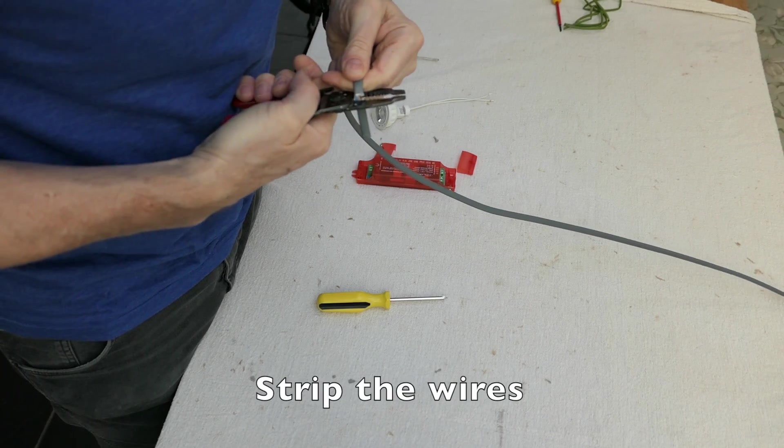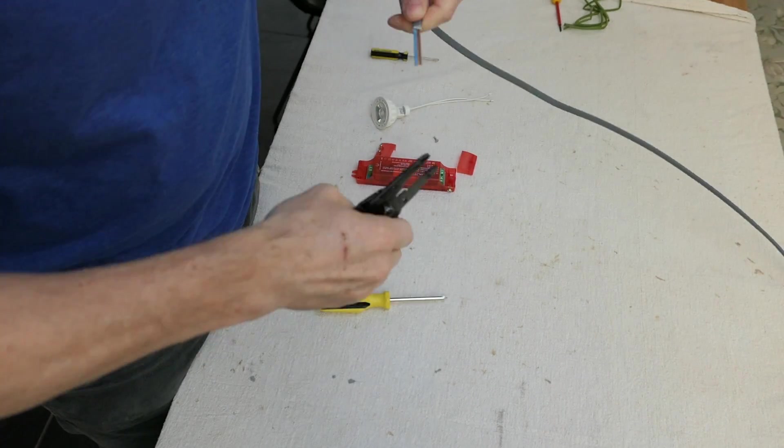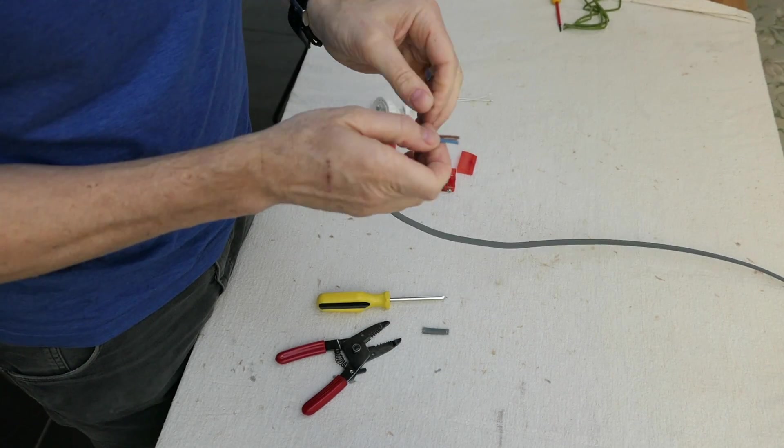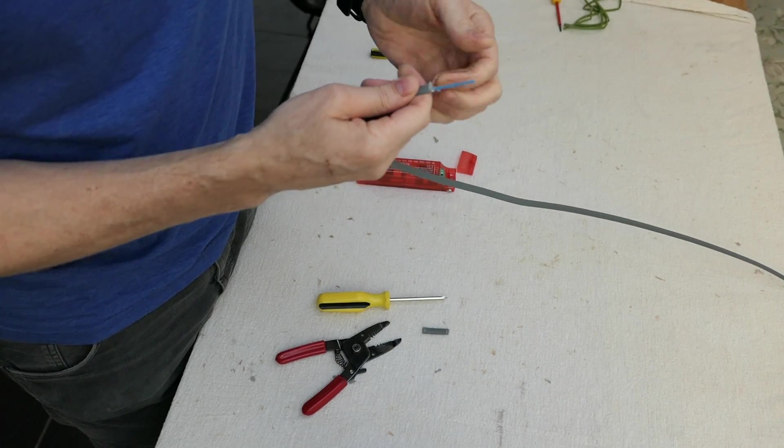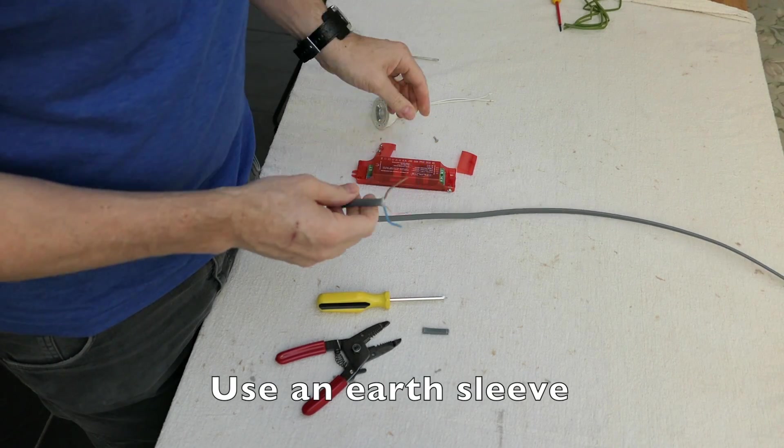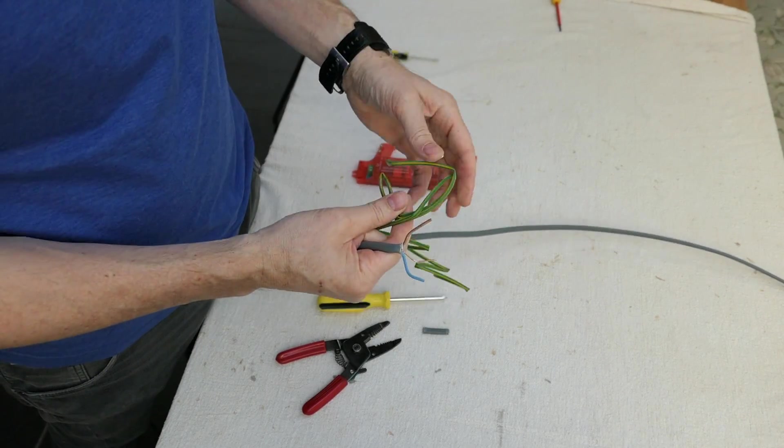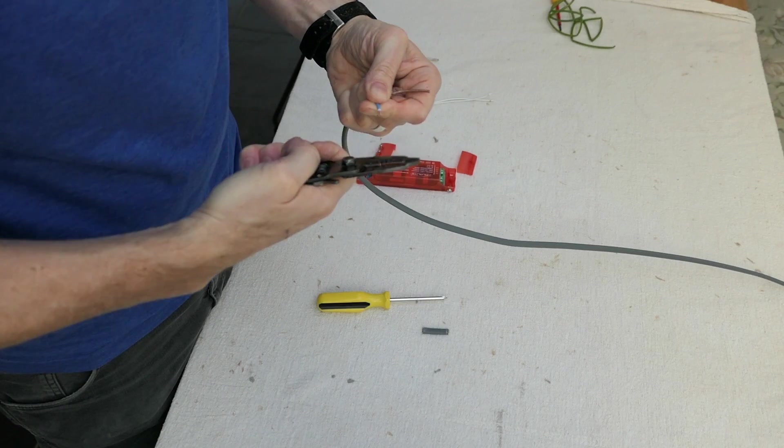Strip the outer casing on the twin and earth. On the cable you've got your live, neutral, and your earth. You will also need an earth sleeve to go over your earth wire. Strip the neutral and the live.